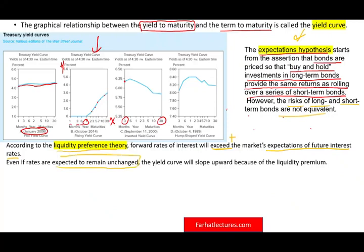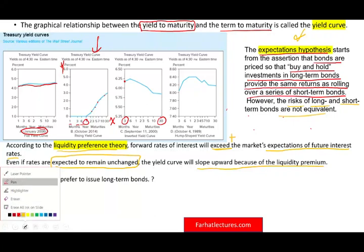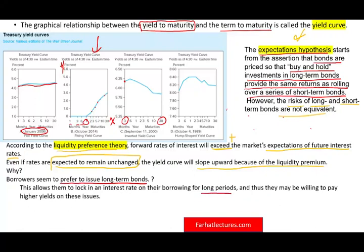Why do we say this? Borrowers will prefer to issue long-term bonds. Think about it — if you are a company or the government and you borrow money, if you can lock your rate for a longer period of time, you will prefer to do so. This allows you to lock an interest rate for a long period of time. Therefore, if you want to lock your interest rate for a long period, you may want to pay a premium. If you want to borrow for 10 years, you have to pay a premium because you don't have to worry about interest rates for the next 10 years.